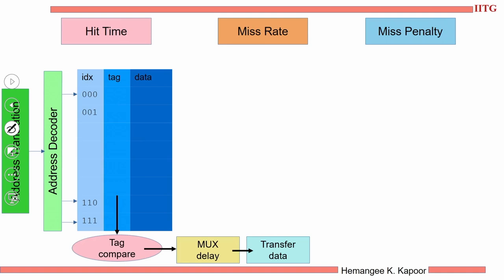If there is a hit in the cache, this is the amount of time we are going to spend. If there is a miss, then we need to spend more time. The miss rate is the percentage of accesses which miss in the cache — it is the number of misses divided by the total accesses.